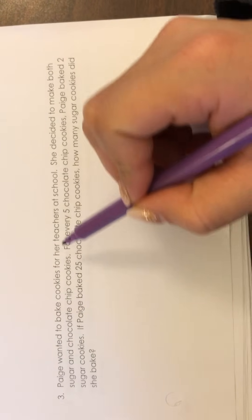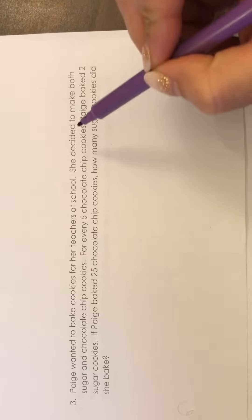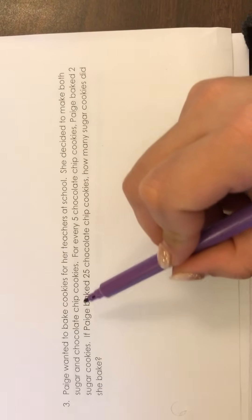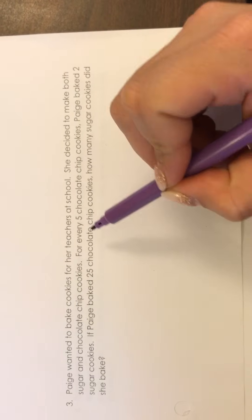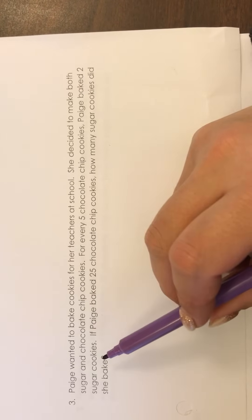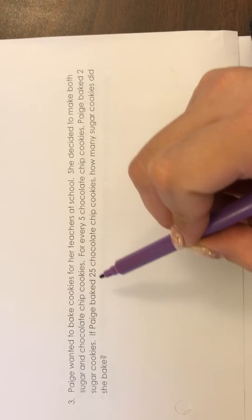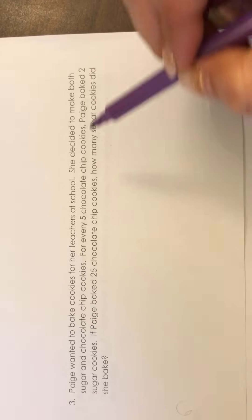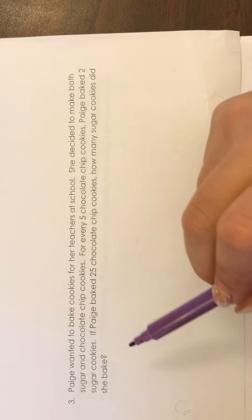It says Paige wanted to bake cookies for her teachers at school. She decided to make both sugar and chocolate chip cookies. For every five chocolate chip cookies, Paige baked two sugar cookies. If Paige baked 25 chocolate chip cookies, how many sugar cookies did she bake?